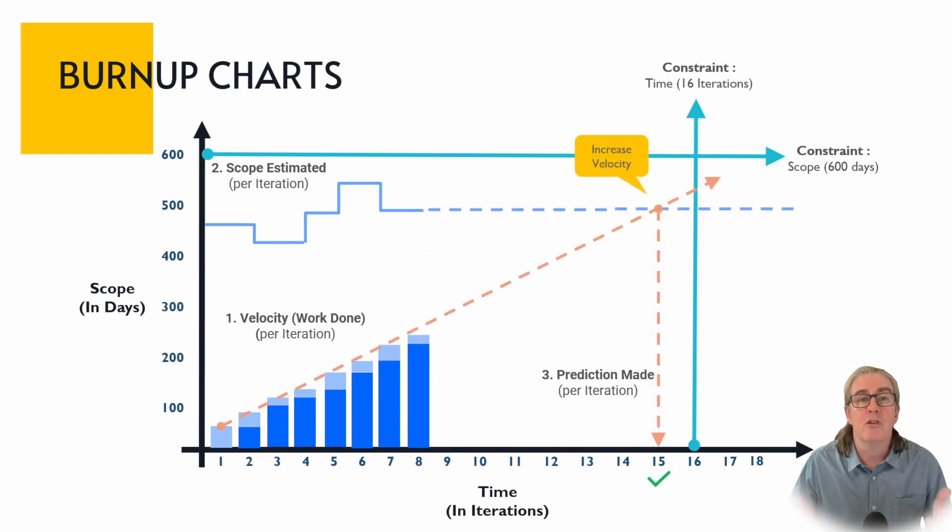The other thing that you can play with is you can increase velocity. Now here there's two different things which you can do to improve velocity. One is that you can typically just add extra resources, you can bring more people to the teams that are actually doing the work. But you can also look at efficiencies about how the work is actually getting done as well. Maybe there's improvements within that sort of development pipeline that you have that if you improve that, that would improve the overall velocity which would mean there's a better chance of you hitting this. And in this case we're making this prediction that it's going to come in on iteration 15. So we're within our 16 iteration constraint that we have.